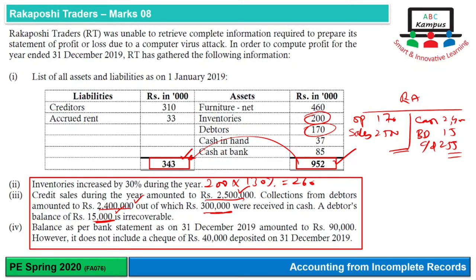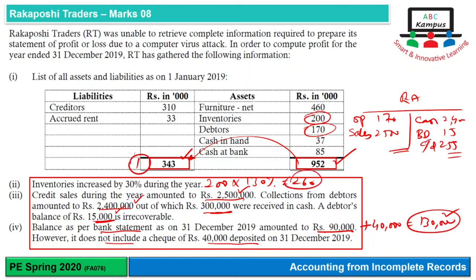Balance as per bank statement as on 31 December is 90,000. However, it does not include a check of 40,000 deposited later — yeh sirf timing ka difference hai. Jab yeh deposited check clear ho jayega, total balance 130,000 hoga. So hum cash book ke hisaab se 130,000 ka balance lenge. Ab opening capital, inventory, receivable, aur cash at bank ki figures note kar lete hain.